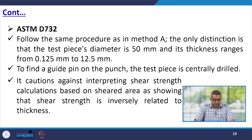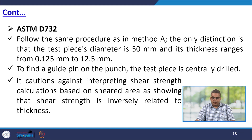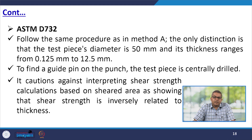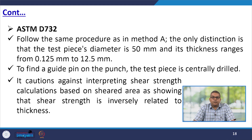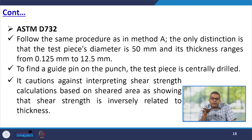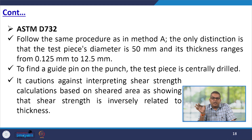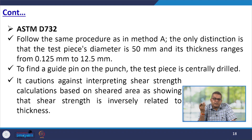ASTM D732 follows the same procedure as Method A. The only distinction is that the test piece diameter is 50 mm and its thickness ranges from 0.125 mm to 12.5 mm. To find a guide pin on the punch, the test piece is centrally drilled. It cautions against interpreting the shear strength calculation based on the sheared area, noting that the test strength is inversely related to the thickness.